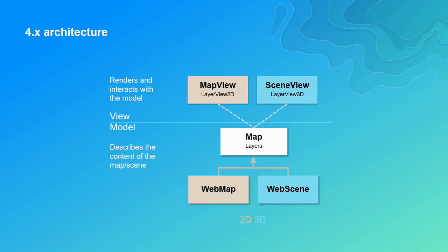We needed this separation because we need to render content in two different ways — in 2D or in 3D. In 2D we use the DOM to render; in 3D we use WebGL. So for the same layer, map, and symbol, if you choose map view it renders in the DOM, and if you choose scene view it renders in WebGL. The map view now also supports feature layer WebGL rendering, but the separation between map view and scene view still exists.